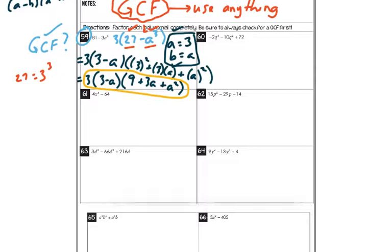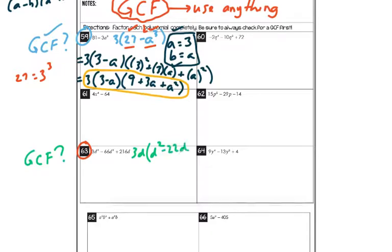Let's try number 63. Let's do a GCF check. There's a d everywhere, and looking at the numbers I think 3 goes into all of them. So let me take out a 3d and see what's left. When I take out a 3d from the first term I get d squared. From the second term, dividing by 3d, I get minus 22d. Factoring the last term by 3d, the d disappears and I just get 72.